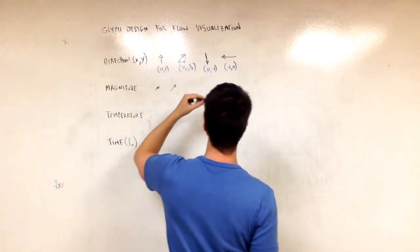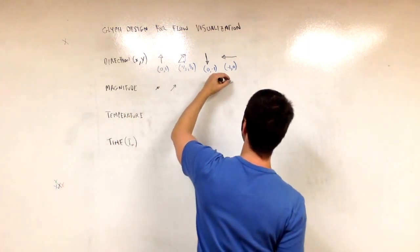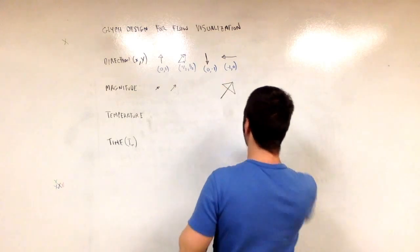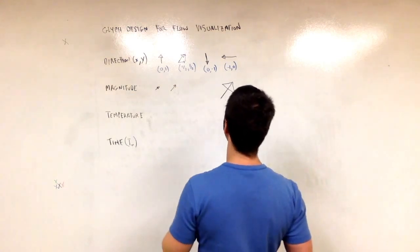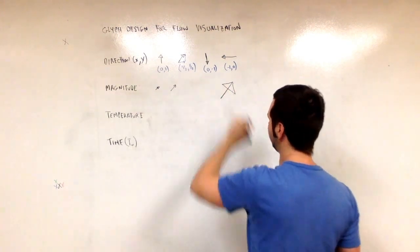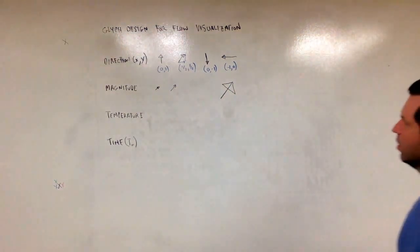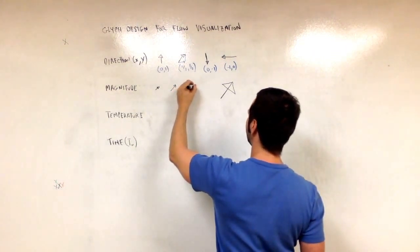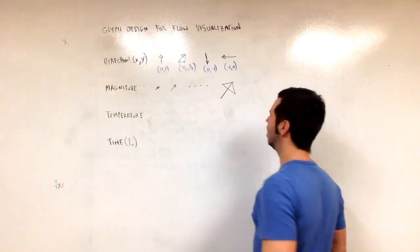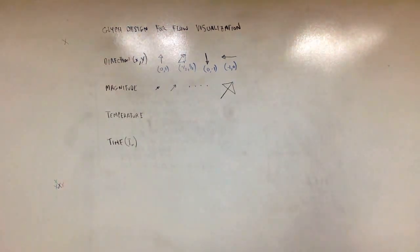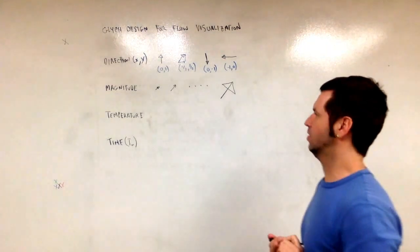Or we could, and we can increase the size. That's a bigger magnitude until we get to really a very big one. And this time I'm going to draw a very big arrowhead to make it clear that this is a very big glyph. So this glyph has large magnitude, small magnitude, and large magnitude. And then there are lots of ones in between. I'm just showing the opposite ends of the spectrum. So that's one possibility.